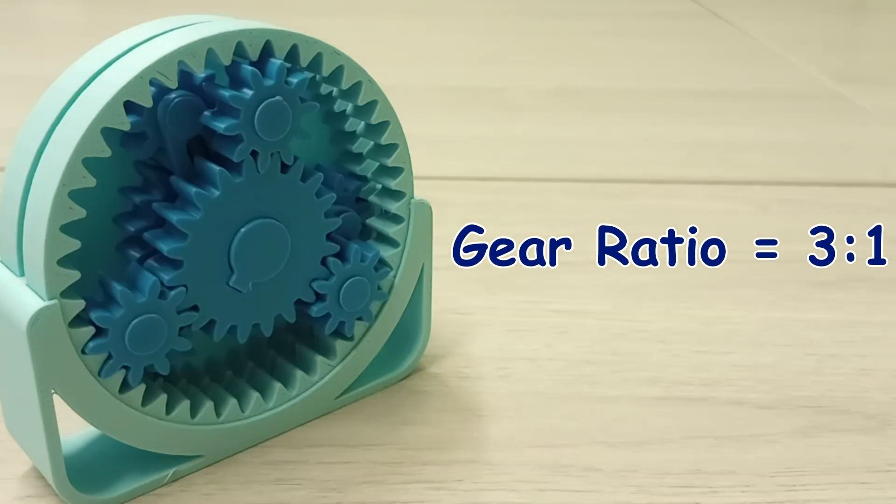And since we know that the gear ratio between sun gear B and the second set of planetary gears would be the same, the speed would then be reduced by a factor of 3 again.